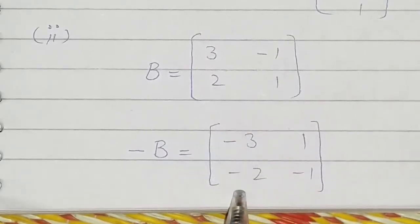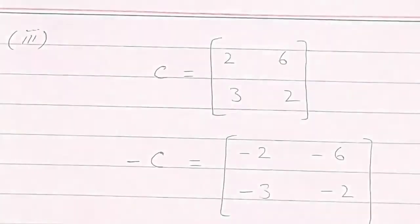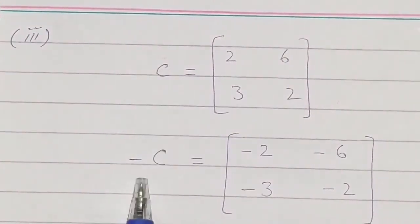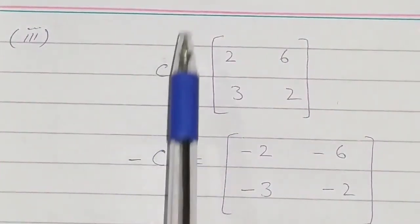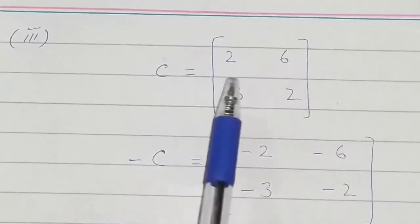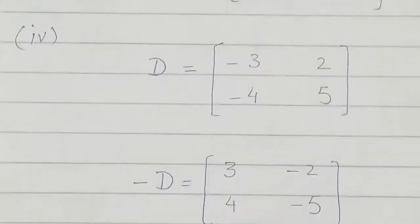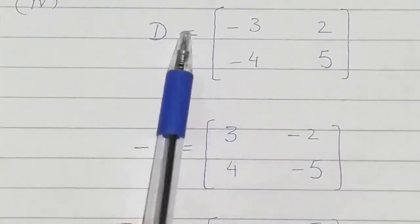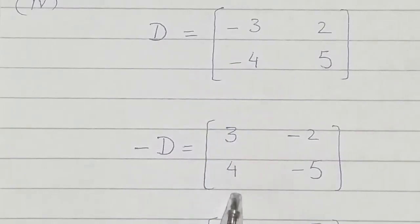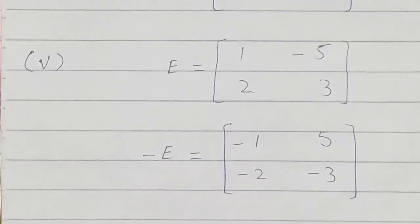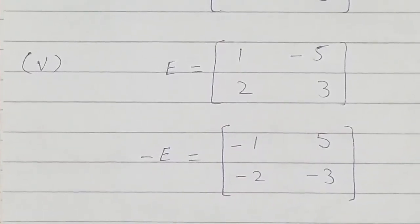The negative of matrix C is found by changing the signs of its elements. Similarly, the negative of matrix D is found by changing the signs of those elements. Matrix E's negative is also found in the same way.